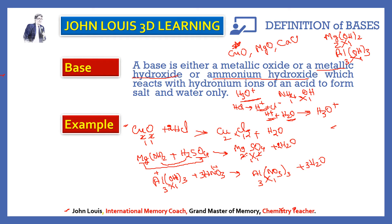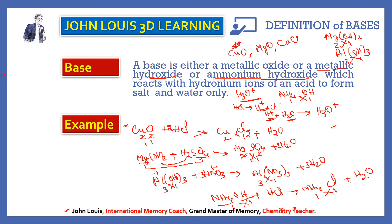Final example: ammonium hydroxide, NH₄OH. It reacts with hydrochloric acid. Ammonium has valency 1 and chloride has valency 1, so the product is ammonium chloride plus water: NH₄OH + HCl → NH₄Cl + H₂O. This equation is automatically balanced. Ammonium hydroxide formula is confirmed: NH₄ valency 1, hydroxide valency 1, interchange gives NH₄OH.